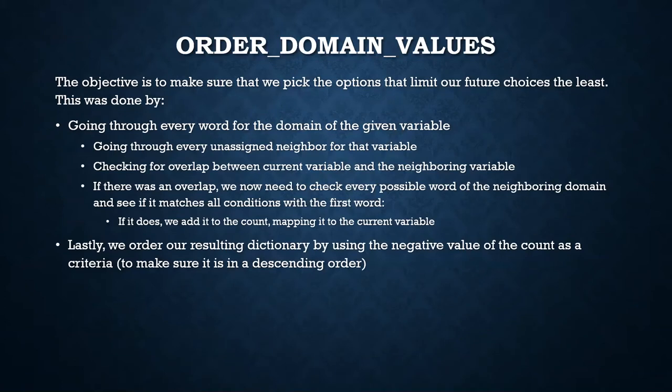For order domain values, we're going to pick options that limit our future choices the least. We go through every word on the domain of a given variable, and go through every one of its unassigned neighbors, checking the overlap between the current variable and the neighboring variables. Therefore, we start checking every possible word of the neighboring domain.